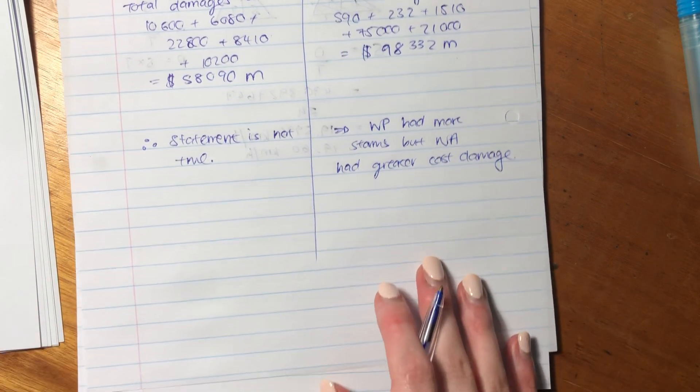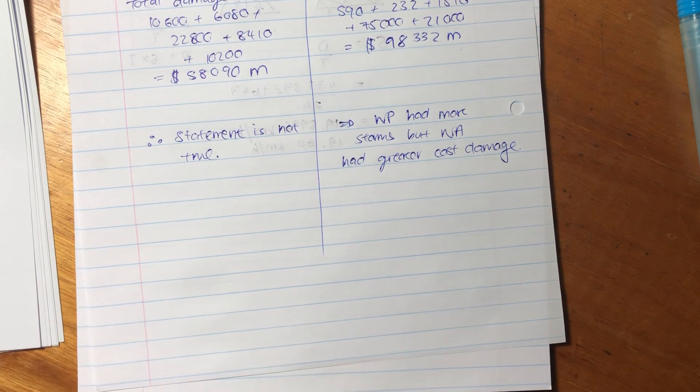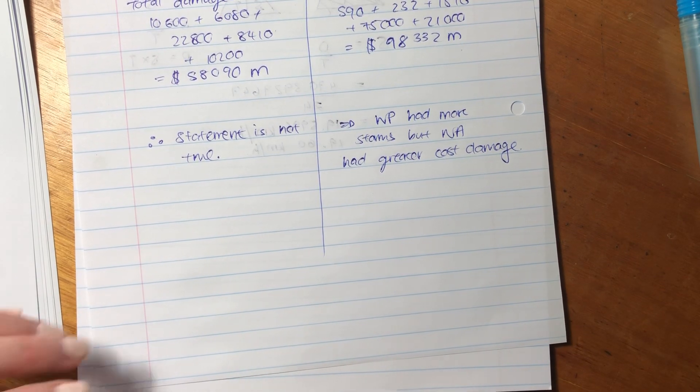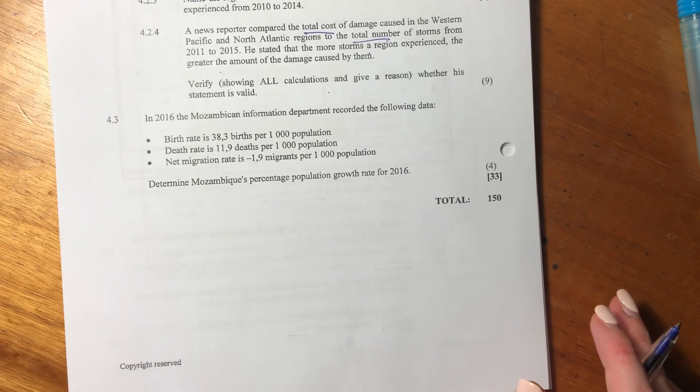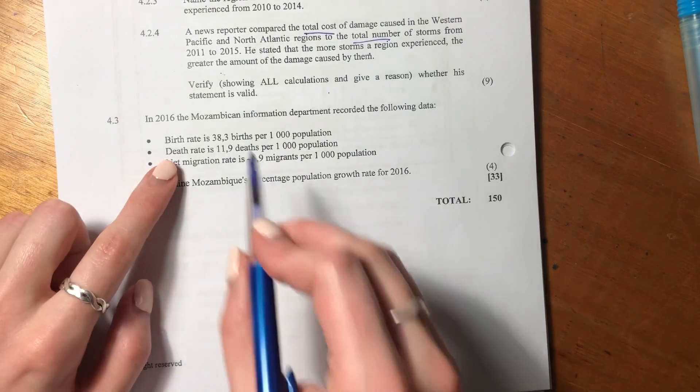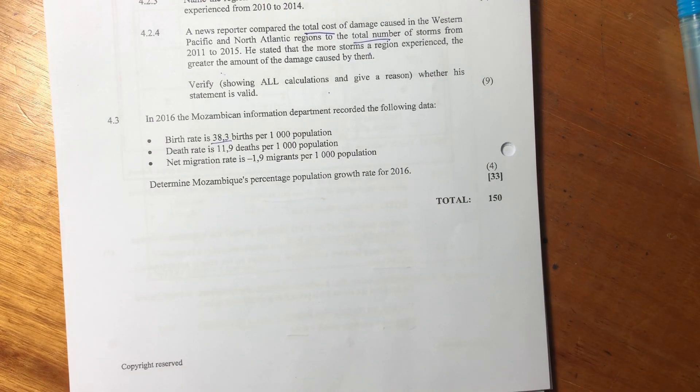So instead of doing another video for 4.3, I'm just going to put it in here, because it's a short one. Let's just do 4.3. I'm going to start on a new page, just so that you can see. And it's still working with this Mozambican scenario. So let's see what it says. It says, in 2016, the Mozambican Information Department recorded the following data. So we have a birth rate of 38.3 births per 1,000 population, deaths of 11.9 deaths per 1,000 population, and migration of 1.9 per 1,000 population. Then it said, what is Mozambique's percentage population growth for 2016?